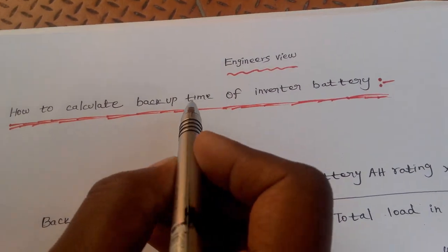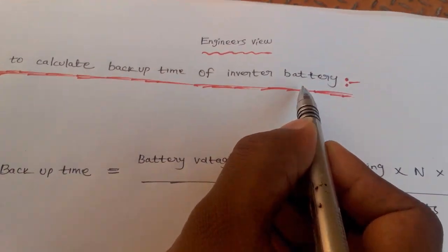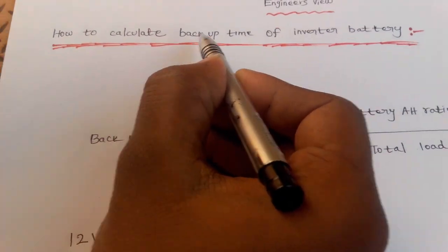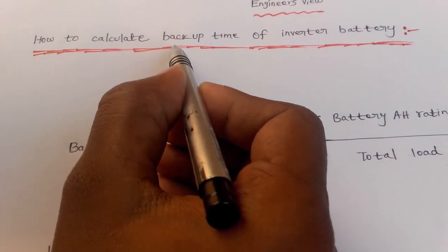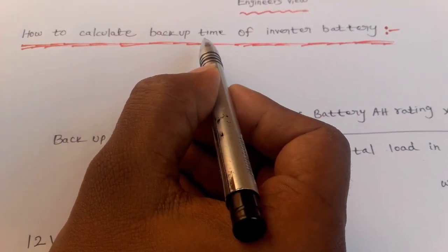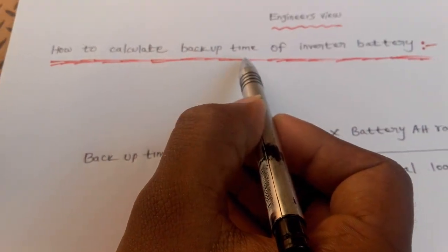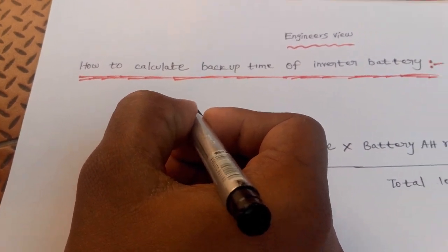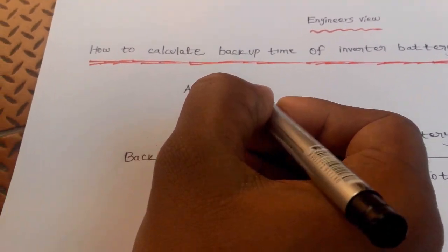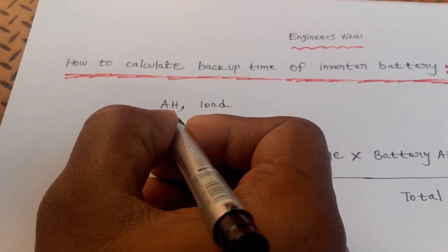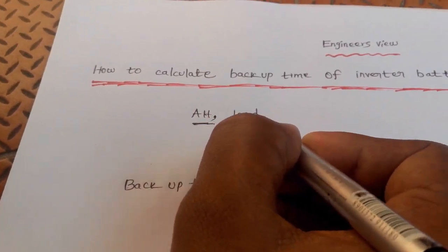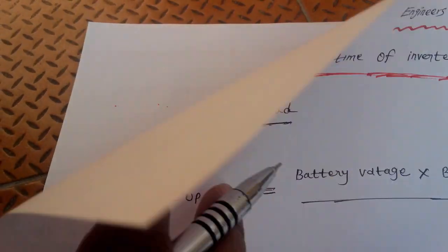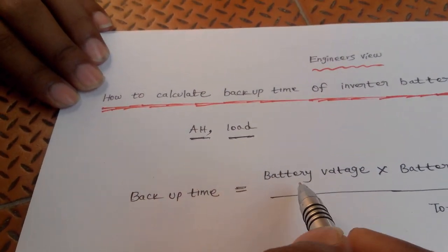How to calculate the battery backup time of inverter battery. The battery backup time general formula is: backup time equals battery voltage times battery AH rating times N times efficiency of battery divided by total load in watts.